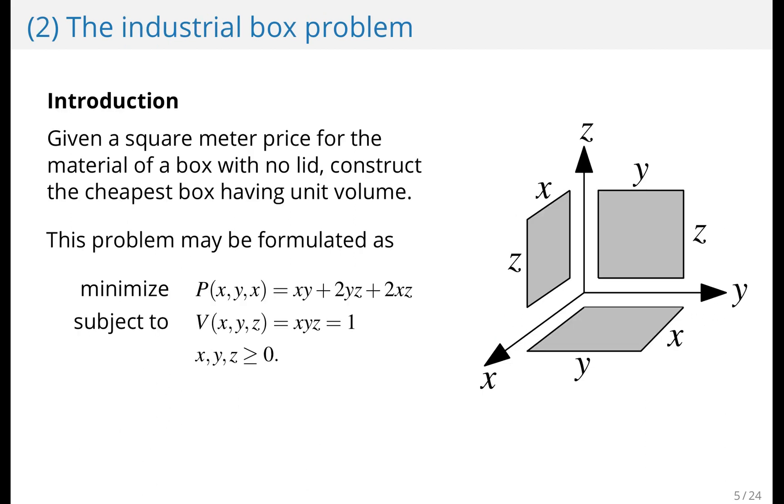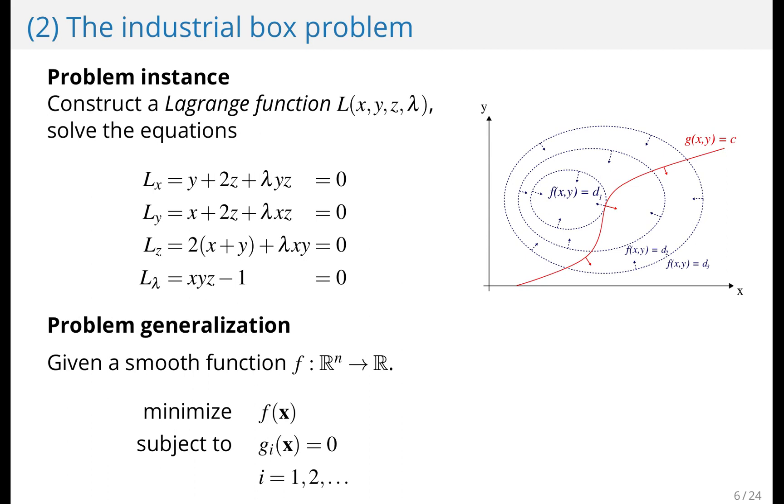The next problem is the industrial box problem. You're given a price for the material of a box and you would like to make a box with no lid so that the volume is one unit volume, but you would like to minimize the total price. This problem is solved using Lagrange multipliers. So you make a Lagrange function and you solve these equations. And it's a technique that works when you have constraints and you can create a function for you to solve.